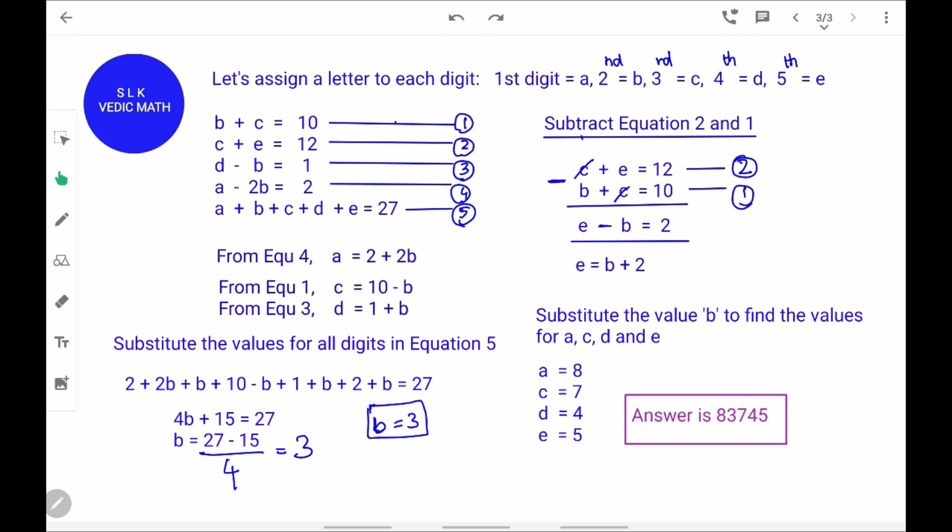To verify our answer, first let's get the answer. We put A which is 8, B which is 3, C which is 7, D which is 4, and E is 5.